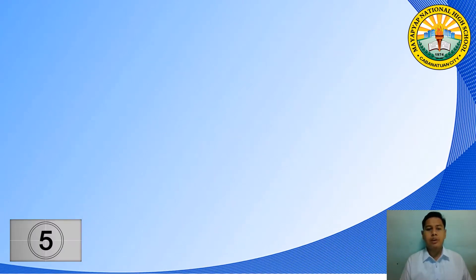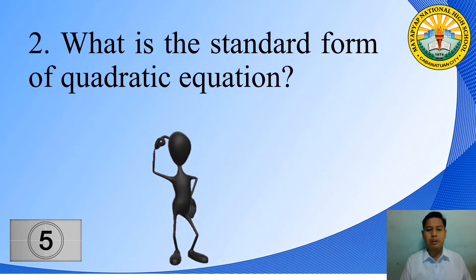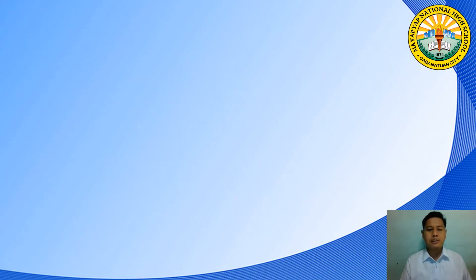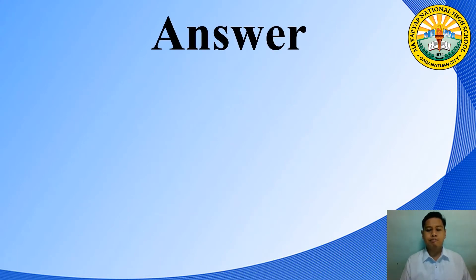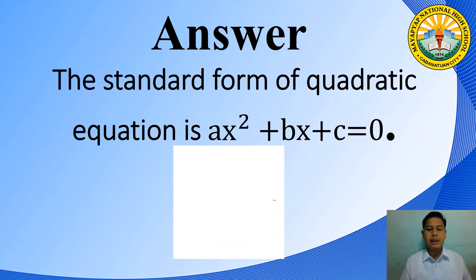Number 2: What is the standard form of a quadratic equation? Time's up! The standard form of a quadratic equation is Ax squared plus Bx plus C is equal to 0.